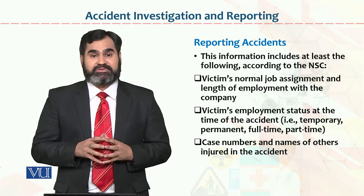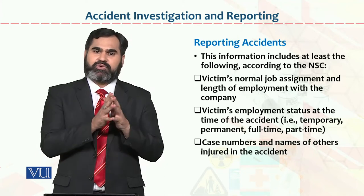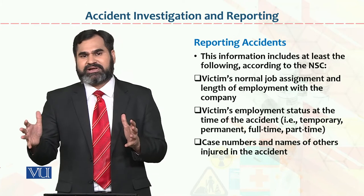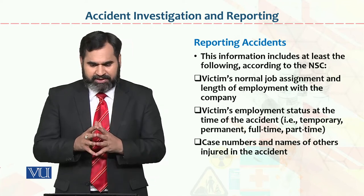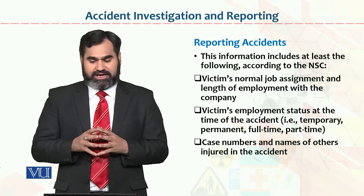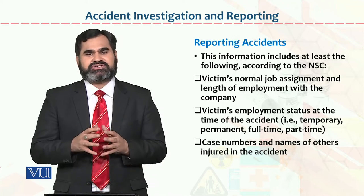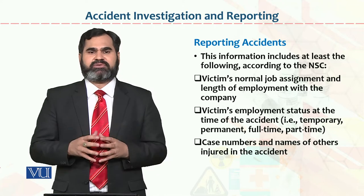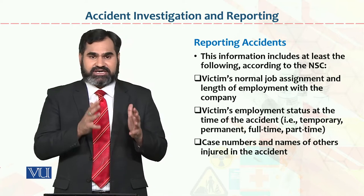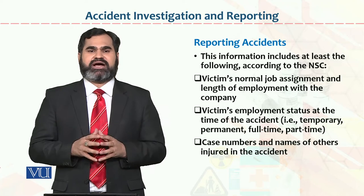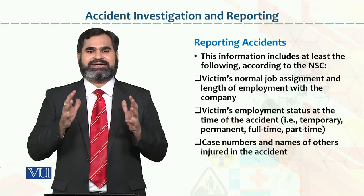Victim's normal job assignment — what was the assignment of the injured person in their routine? Were they an employee of production and got injured in production, or were they from another department working in production on a job rotation basis? Victim's employment status — whether temporary, permanent, on daily wages, or contractual. What was their job category? Health benefits are given accordingly. Case number and names of other injured in the accident — knowing about all others injured is also very important; without this, you cannot prepare a comprehensive report.